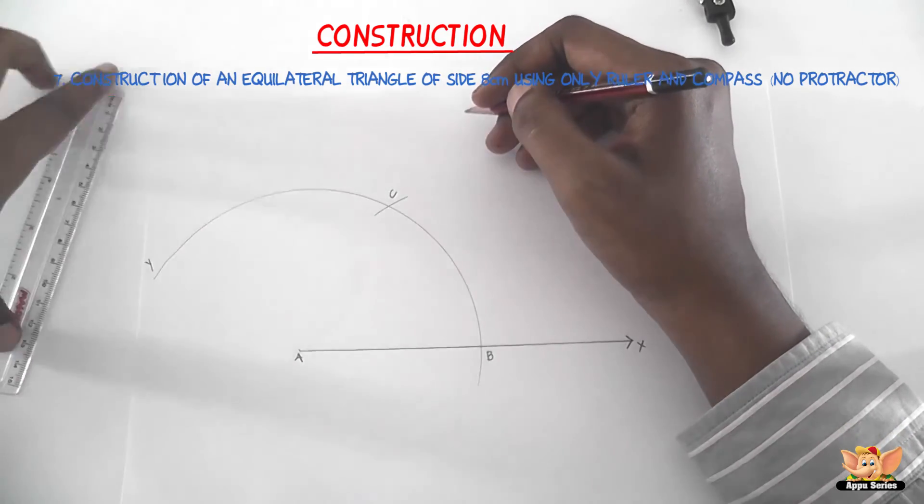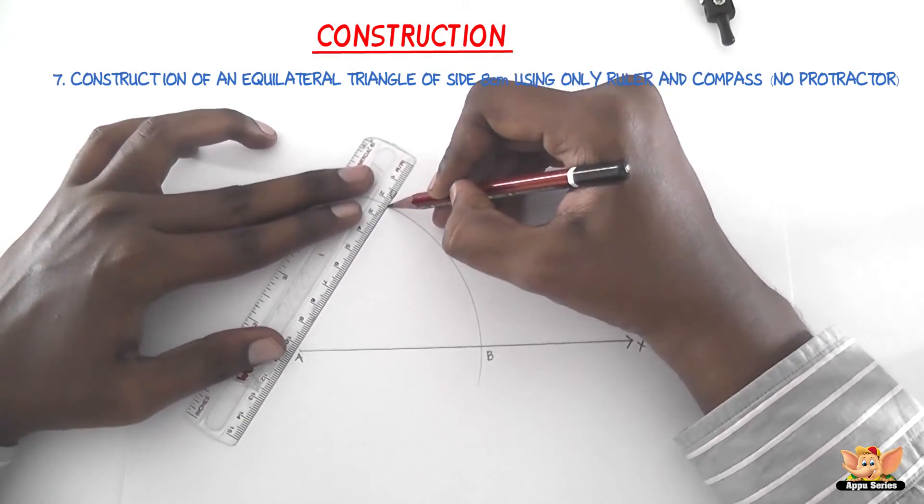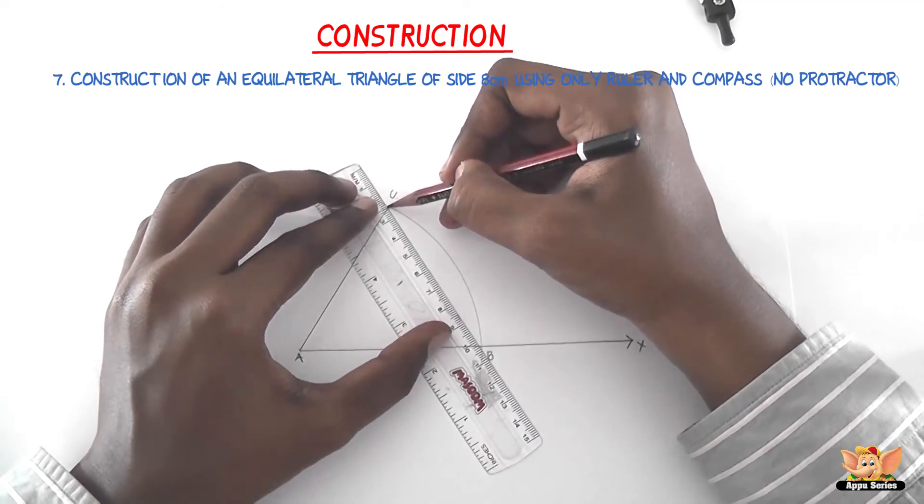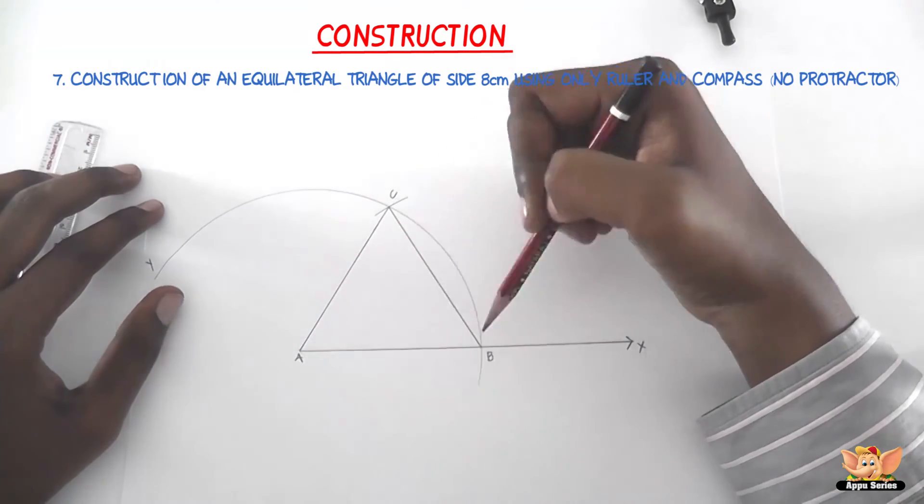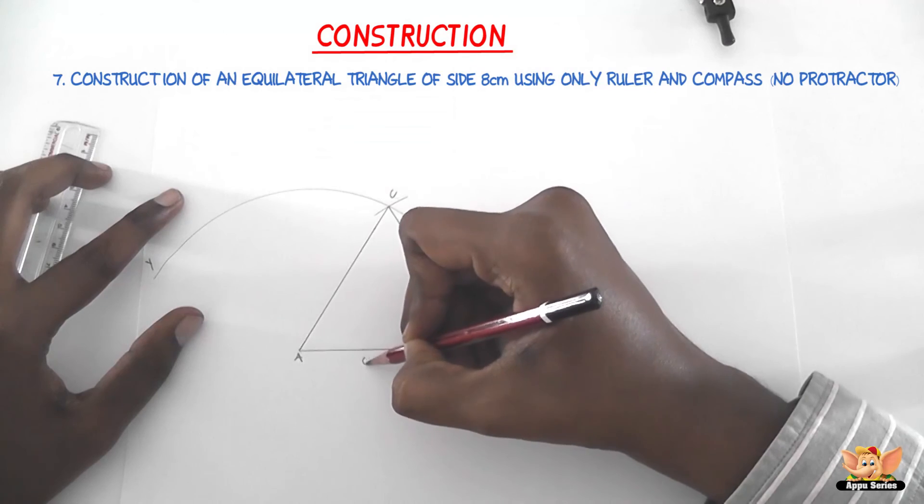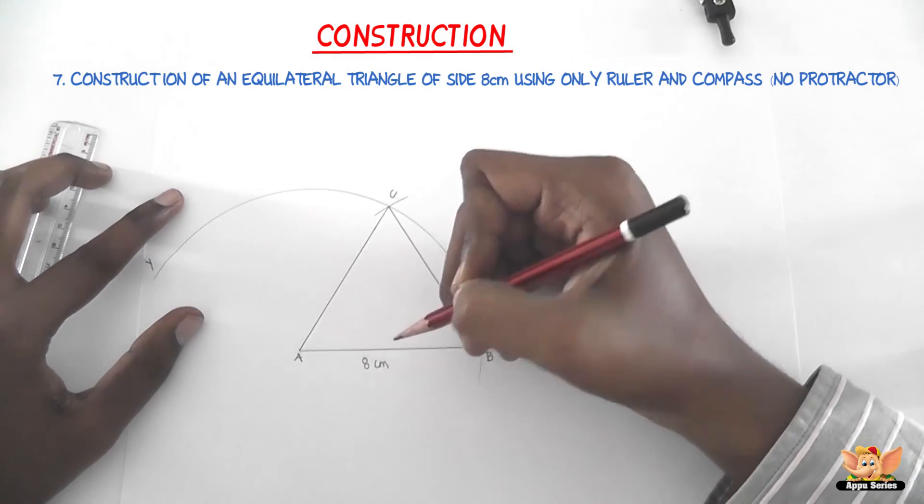The final step is to join A, C and B, C. And so the obtained triangle ABC is the required equilateral triangle of length 8 centimeters.